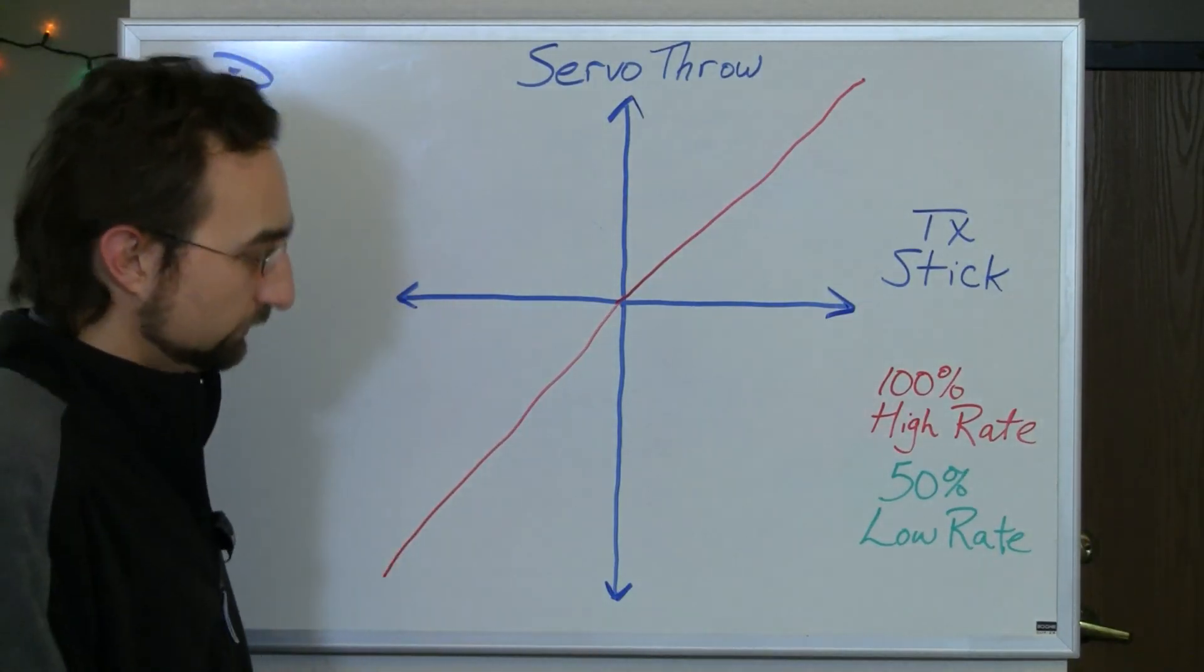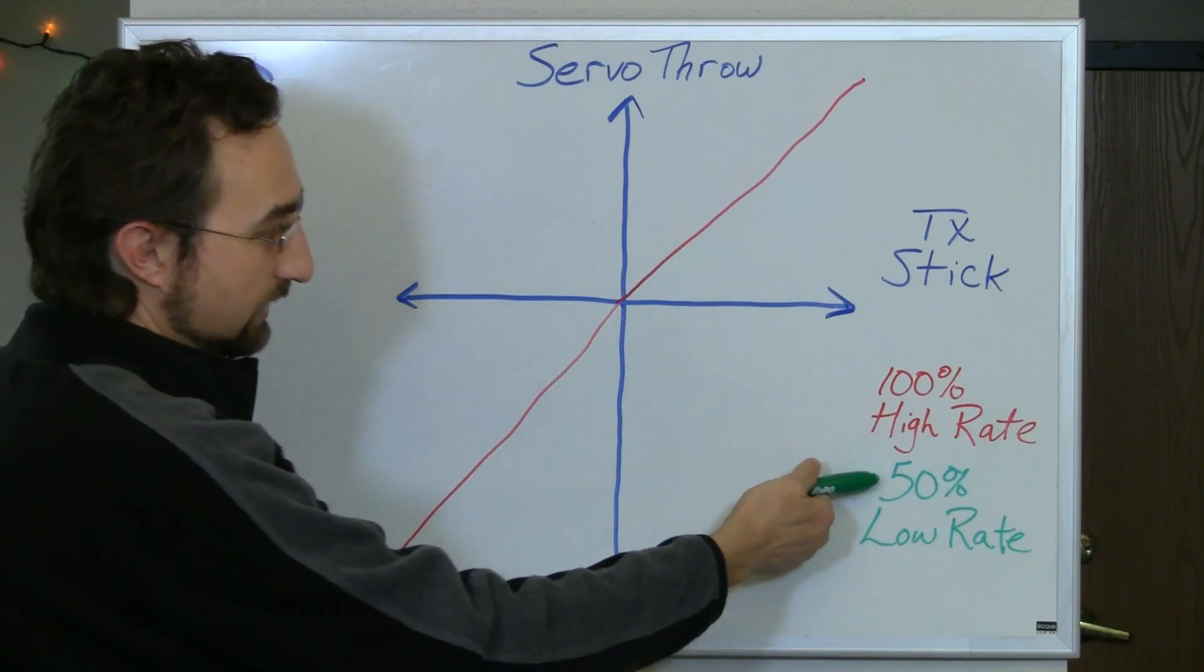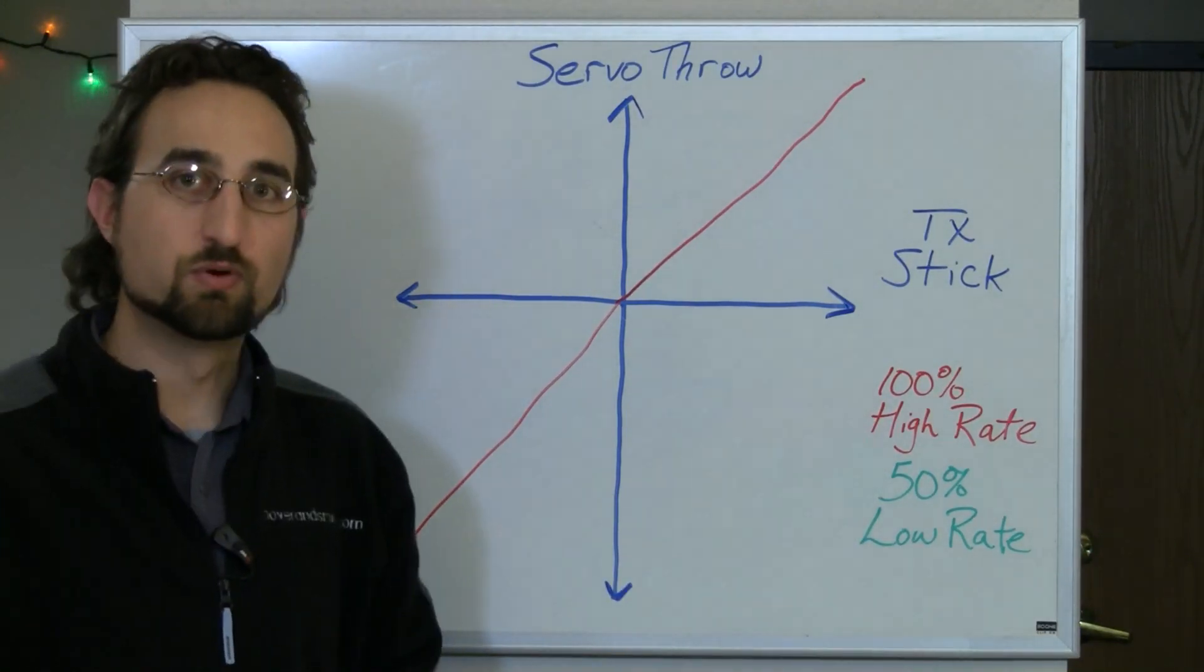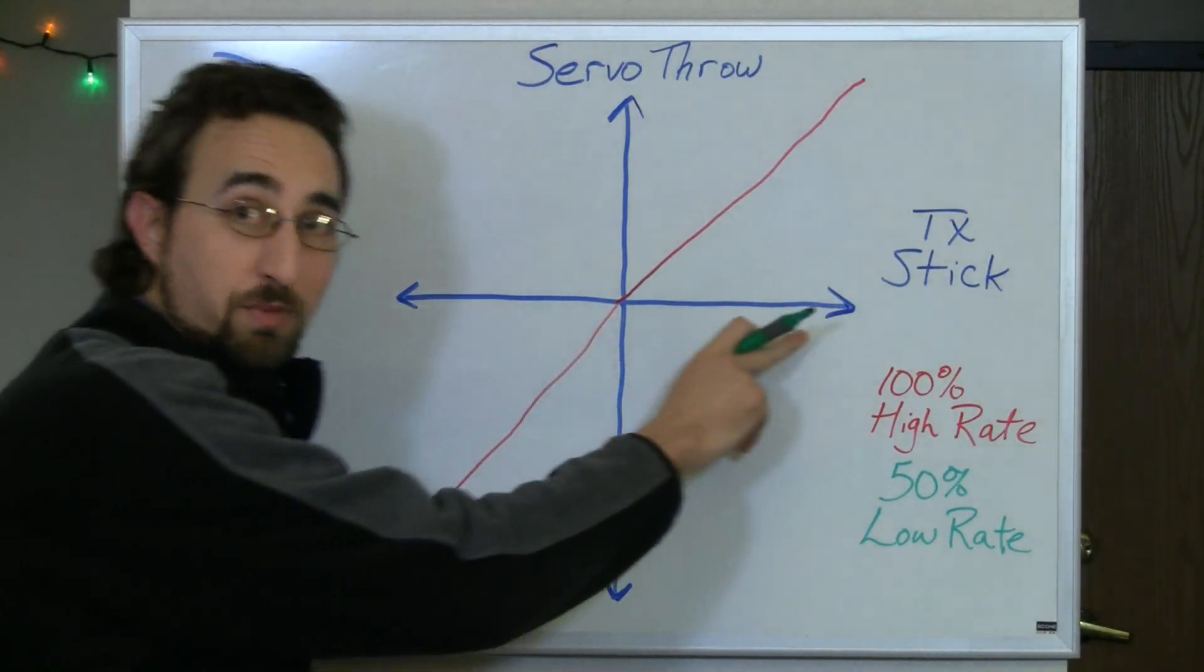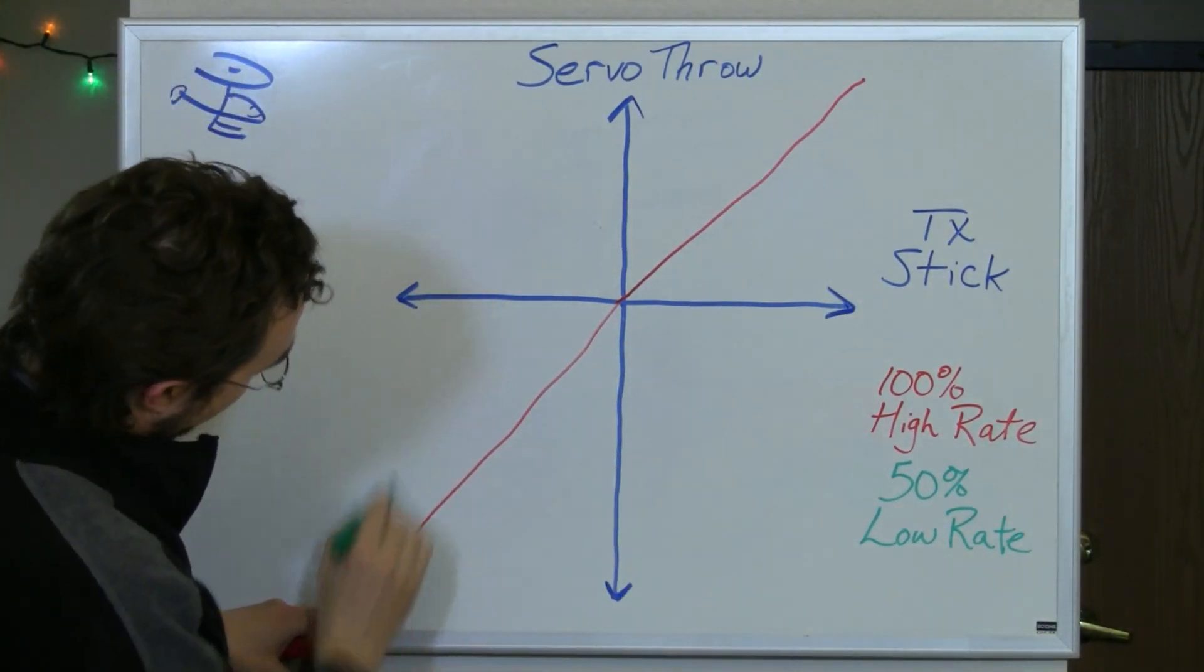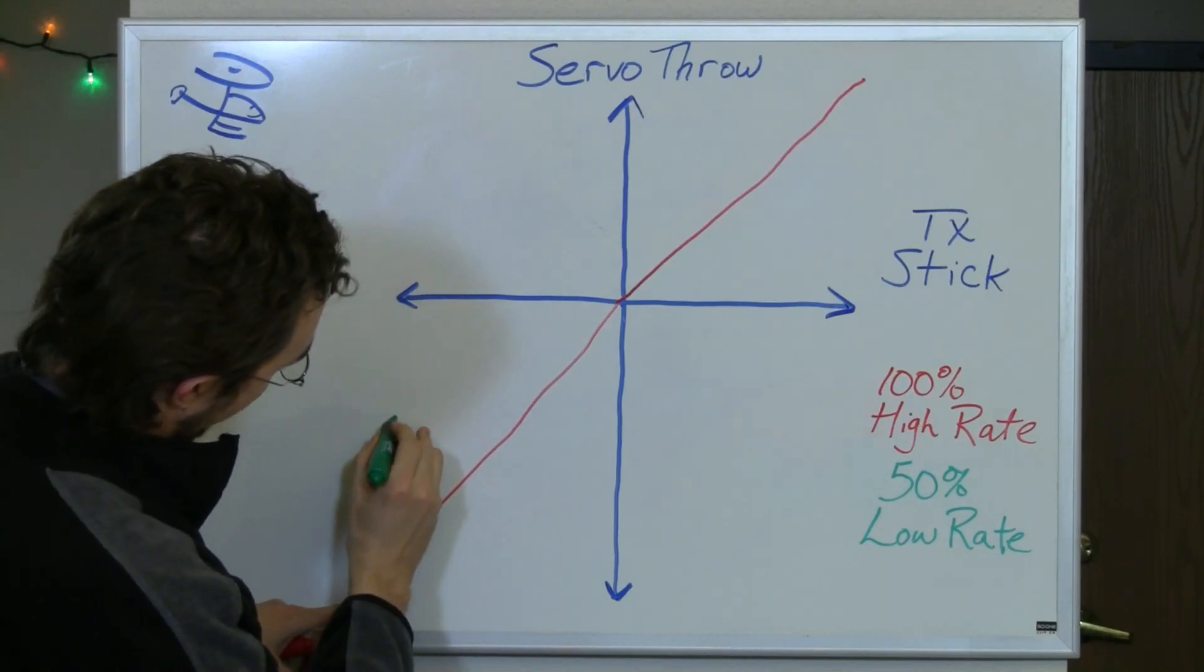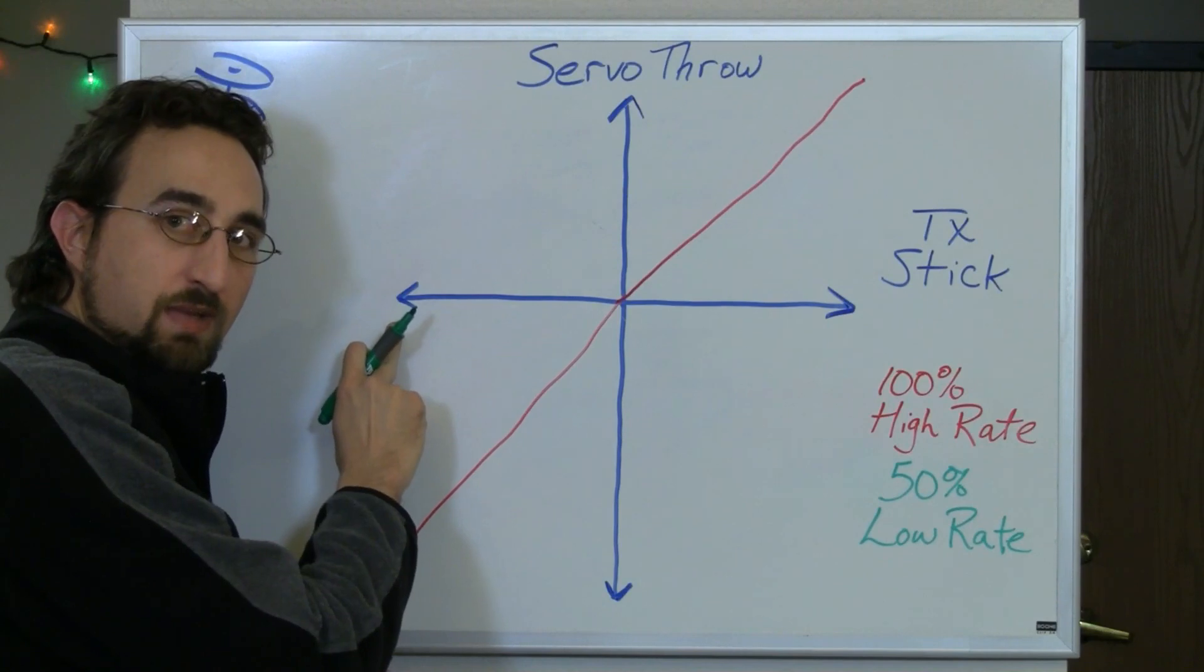So what you can do is set up a low rate. And we've got a low rate here. We've just defined this as 50%, meaning half of the throw. The transmitter stick movement remains the same. I start about here, which is about 50% from here to here. So eyeball it looks about here.